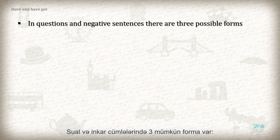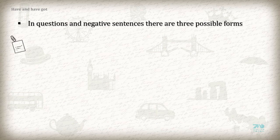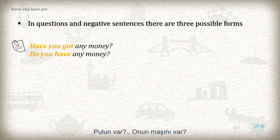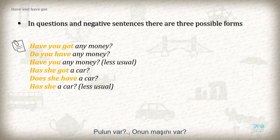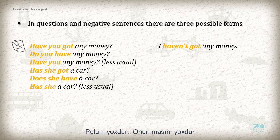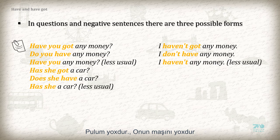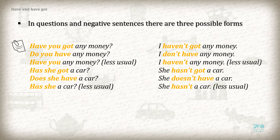In questions and negative sentences there are three possible forms. Have you got any money? Do you have any money? Have you any money? (less usual). Has she got a car? Does she have a car? Has she a car? (less usual). I haven't got any money. I don't have any money. I haven't any money (less usual). She hasn't got a car. She doesn't have a car. She hasn't a car (less usual).